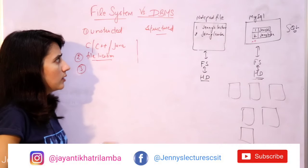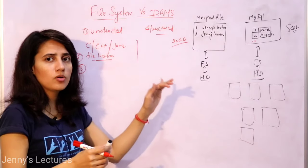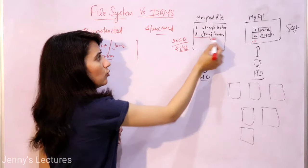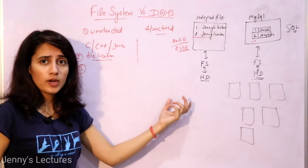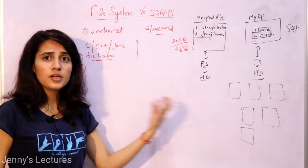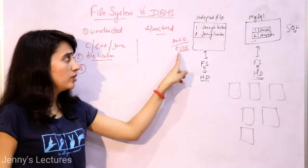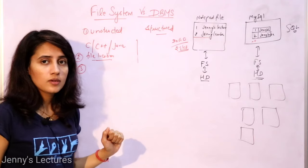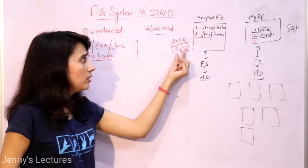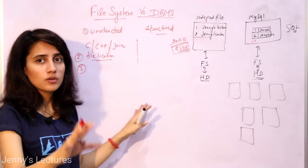Third point: suppose a file is 20 GB in size, but I only want to access 25 KB of information — say, one row. In file system, when you write a C program to access it, the complete file gets transferred to you — all 20 GB — even though I only want 25 KB. In DBMS, you get only the specific information you requested — just the 25 KB. That is another advantage of DBMS.